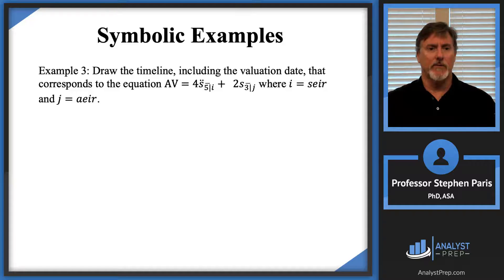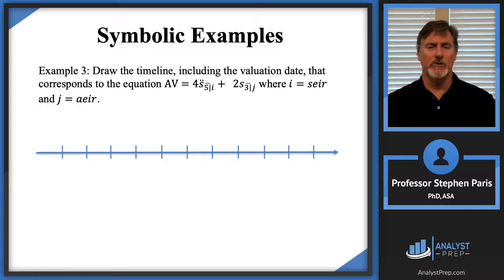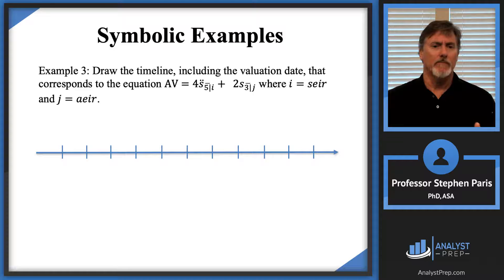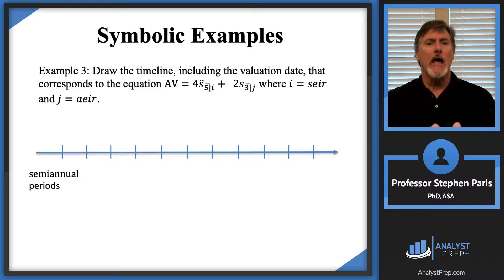Finally, let's do one last example. Draw the timeline including the valuation date corresponding to this equation. I've got an expression for an accumulated value that has annuity symbols in both terms. I'm told that i is the semi-annual effective interest rate and j is the annual effective interest rate. I'll draw a timeline with enough tick marks to fill in all the payments. In this situation I'm going to choose the time periods to be the shorter of the two — semi-annual periods. It's an accumulated value, so I'll pick a valuation date towards the right.